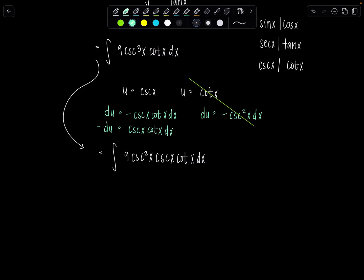So when I make this u sub, I'm going to have to add a negative. And I like to put it outside. I'm also going to put the 9 there. Okay, here we go. Let's rewrite the integral in terms of u.